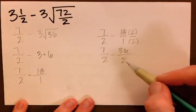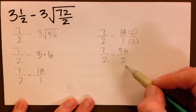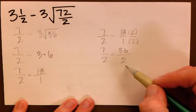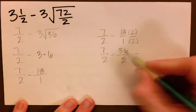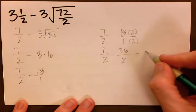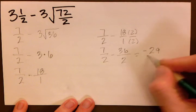We now have a fraction that we can subtract. We have common denominators. So now all we have to do is subtract. When we take 7 and we subtract 36 we get negative 29 over 2.